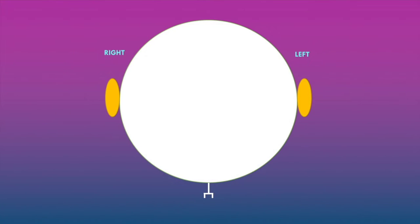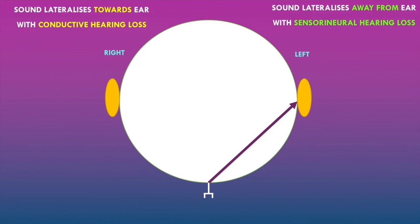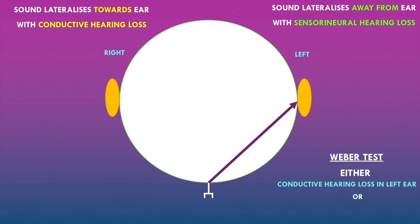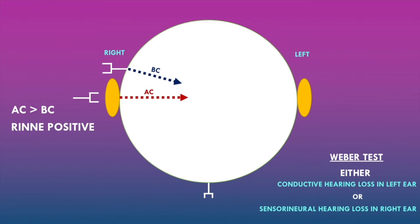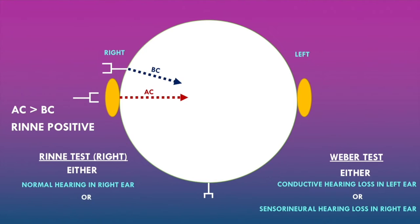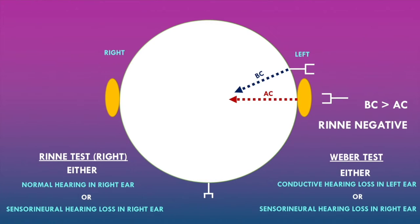The Weber test showed lateralization to the left ear, indicating either conductive hearing loss in the left ear or sensorineural hearing loss in the right ear. The Rinne test in the right ear showed air conduction greater than bone conduction — a Rinne positive test — indicating either normal hearing or sensorineural hearing loss in the right ear. The Rinne test in the left ear showed bone conduction greater than air conduction — a Rinne negative test — indicating conductive hearing loss in the left ear.